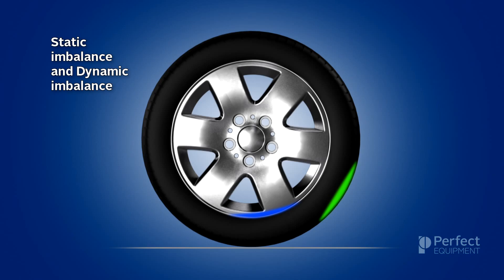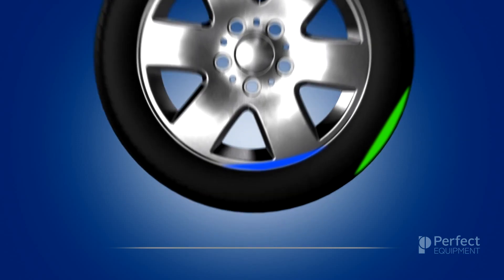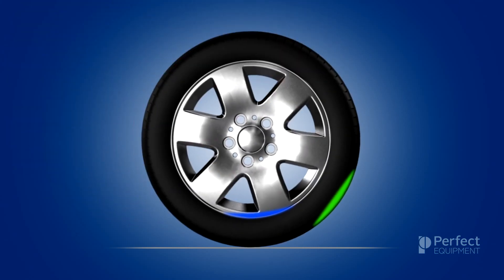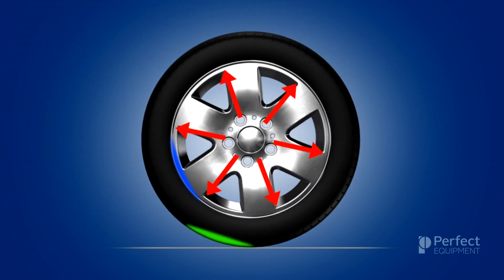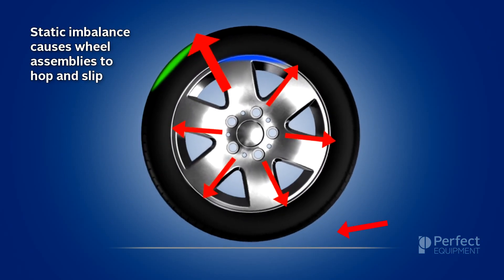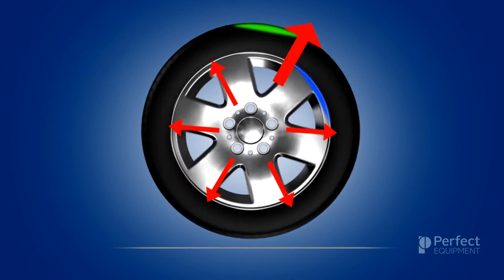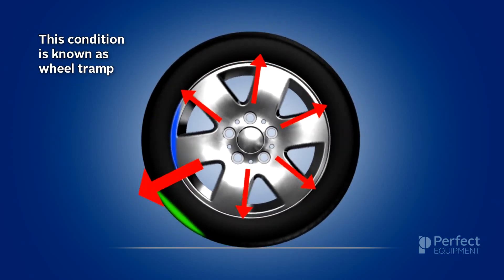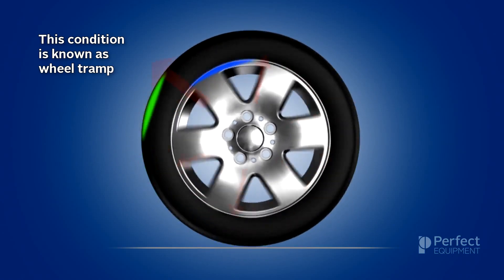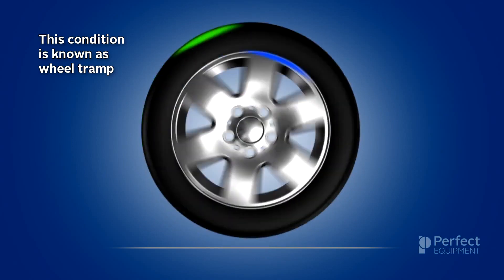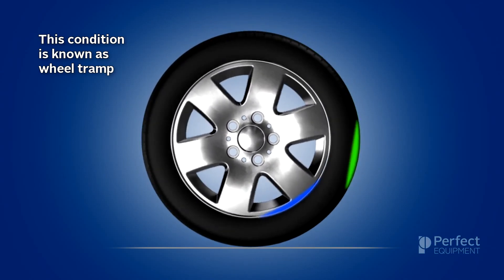The imbalance shown in the current example is known as a static imbalance and features a combined heavy spot — an imbalance to the wheel noted in blue and to the tire noted in green. As the tire rotates, the centrifugal forces of the imbalance cause the wheel to hop when the heavy spot reaches the top of the rotation and cause the wheel to slip when it reaches the bottom. This condition is known as Wheel Tramp. If left unchecked, Wheel Tramp will produce uneven wear patterns on the tires and cause a severe up-and-down vibration while driving at highway speeds.